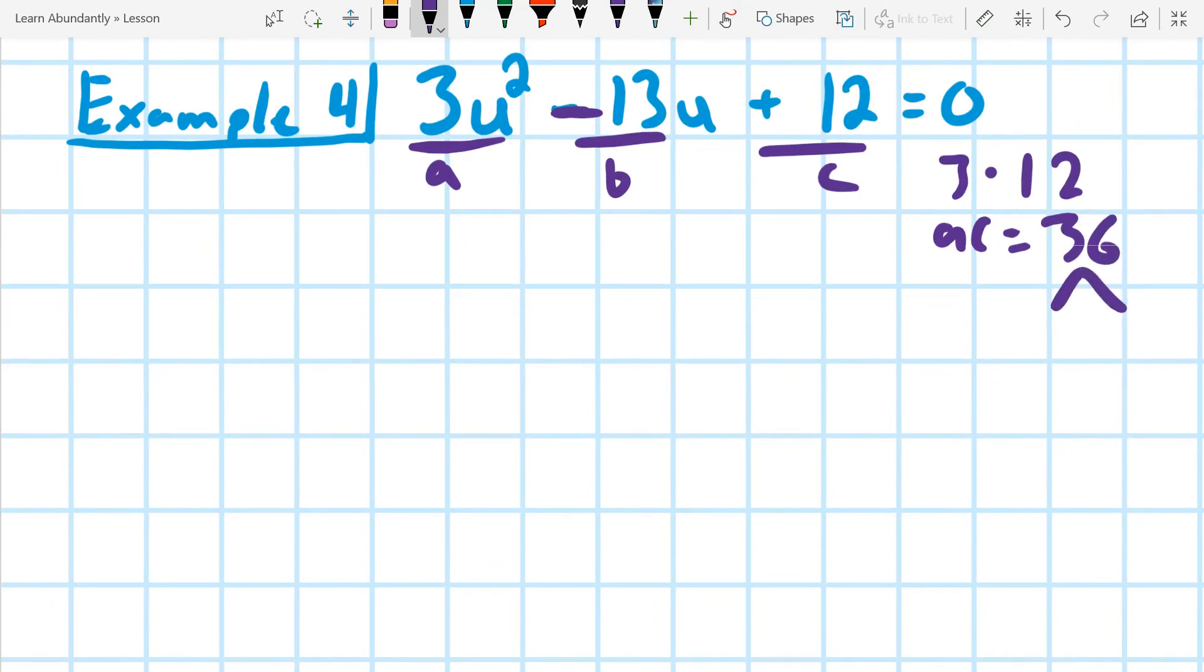We're going to list all of the factor pairs of 36, and that's going to be 1 and 36, and 2 and 18, and 3 and 12, and 4 and 9, and 5 doesn't go in, but 6 does. 6 and 6, and then I'm actually going to stop because I've already hit the same number on both sides, so it's just going to kind of loop back. The next one will be 9 and 4.